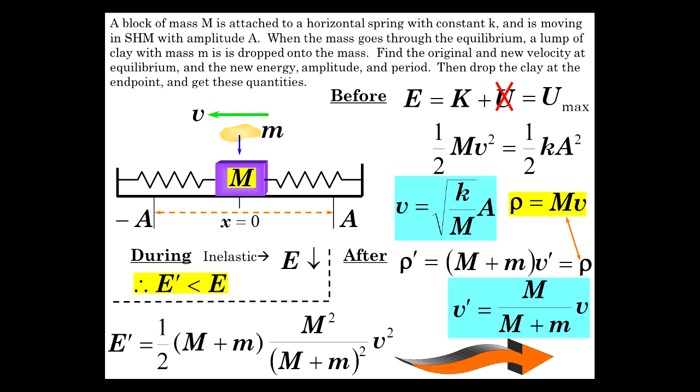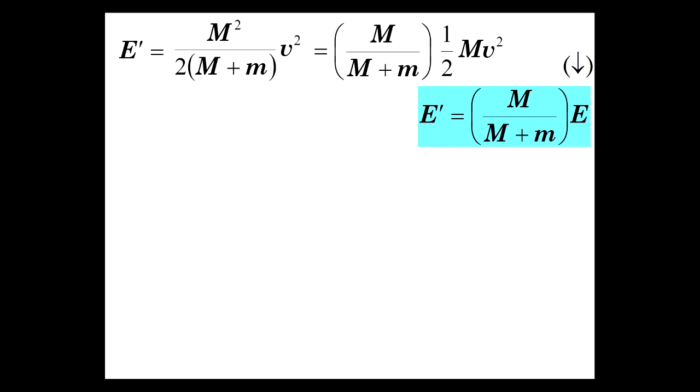But let's finish this problem. So from that equation, we have the mechanical energy is m squared over two times M plus m times v squared. And you'll notice that there is an m over M plus m in there that I'm going to now factor out. And what's left is one-half m v squared, which is the original maximum kinetic energy or the mechanical energy. So the new mechanical energy has gone down proportional to this factor here, m over M plus m.